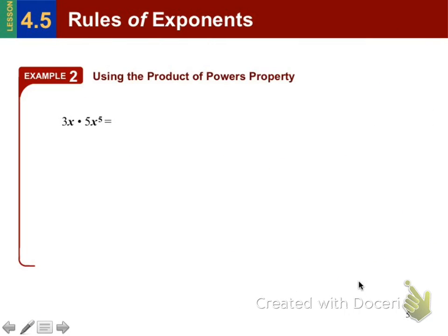Using the product of powers property, now we're going to have some coefficients here. Now we can use that commutative property of multiplication because the 3 and the 5 are not raised to a power. We could simplify that. So let's look at using commutative property. You can rearrange it and take the coefficients 3 and 5 and put those together because they don't have a power. But the x's do.